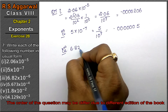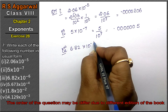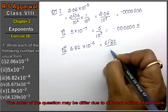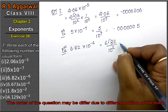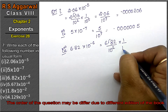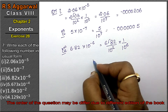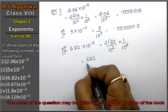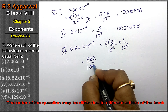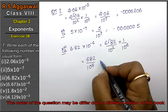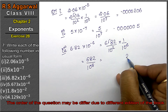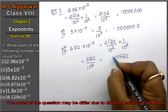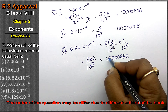Let's do the third part: 6.82 × 10⁻⁶. We have 6.82, so 682 upon 10 to the power 8. After 8 digits we place the decimal point — that gives us 0.00000682. That is the answer.